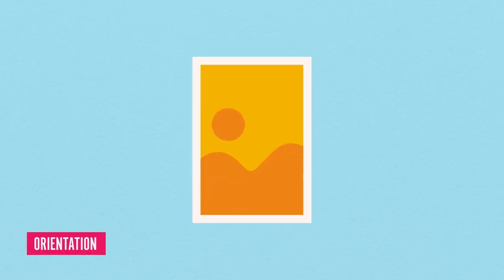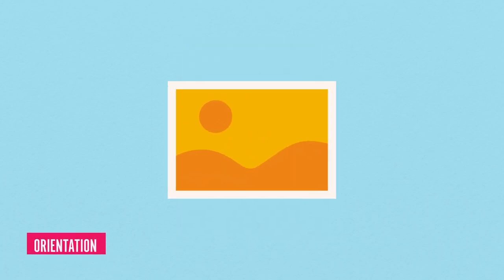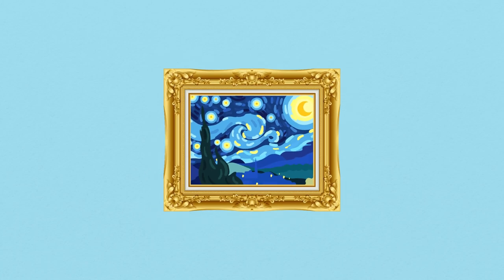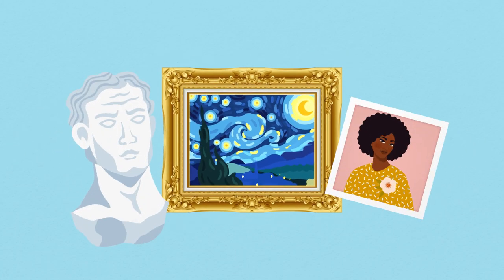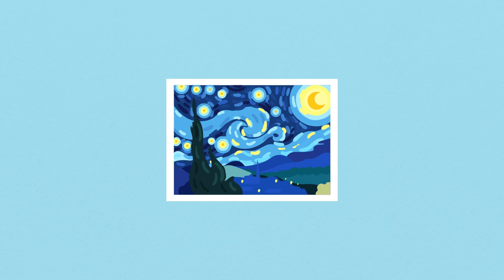When we refer to orientation, we often think of portrait, landscape, or perhaps square. Each have their origins in traditional painting, sculpture, and photography. Describing the dimensions of artwork that features a person's face, upper, or full body as portrait, landscape orientation historically captures images of horizons and scenery. As such, the dimensions required the width to be greater than its height.